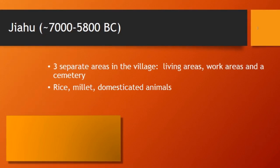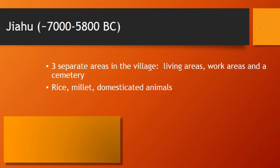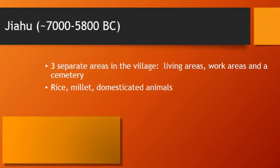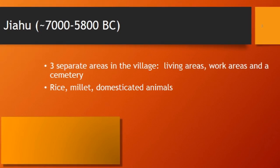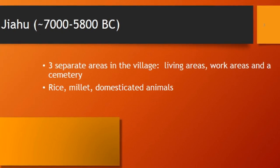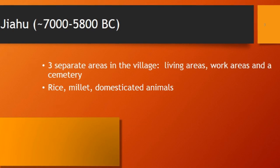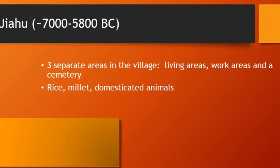This is different than what we looked at with Çatalhöyük. Looking at archaeological material from Jiahu, they were definitely in the Neolithic and farming, because you find evidence of rice, millet, and domesticated animals. You should be asking yourself how we know this — and the answer is archaeological material: archaeologists do soil samples and find bits of bone or bits of plant material.